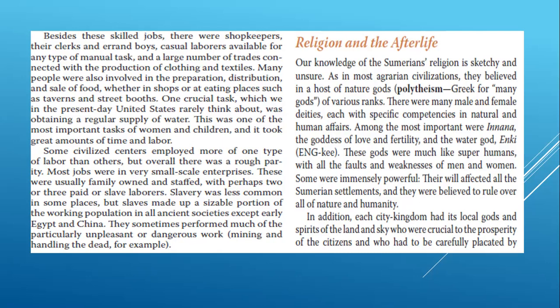Religion and the afterlife — we'll touch a little bit on that, though we're more concerned this week about agrarians. Our knowledge of Sumerian religion is sketchy and unsure. As in most agrarian civilizations, they believed in a host of nature gods — polytheism. Like in Japan with Shintoism, most everybody worshipped nature gods all over the world. These gods had various ranks; some gods were higher than others or had more power. In the Aztec religion there was even a god for getting drunk.